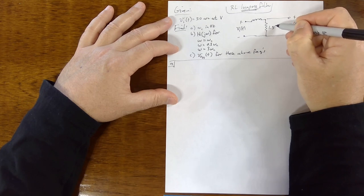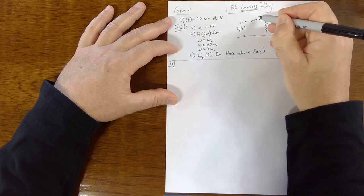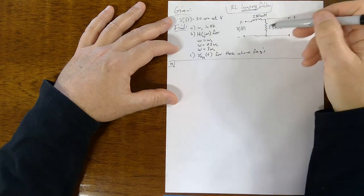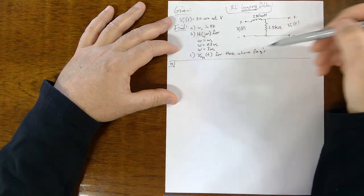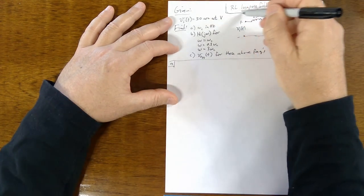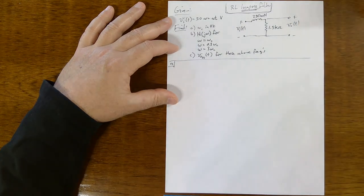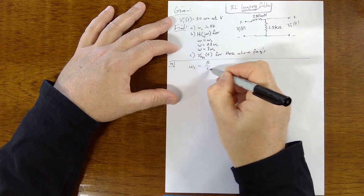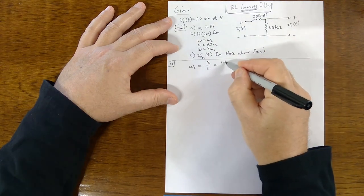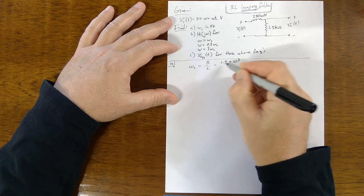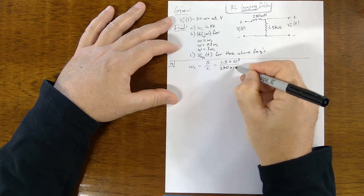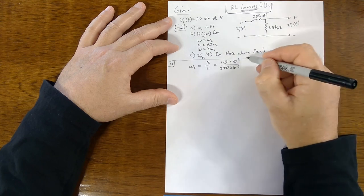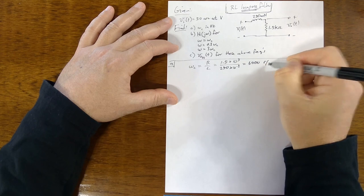So R is 1.5 kilohms and L is 250 millihenries. Right off the bat we can calculate the cutoff frequency since we're given R and L. That's 1.5 times 10^3 over 250 times 10^-3, which ends up with 6,000 radians per second.